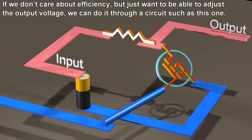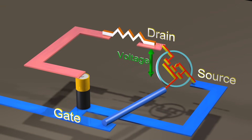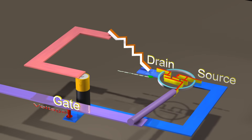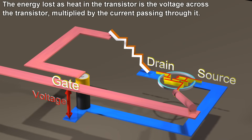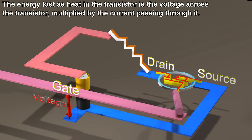If we don't care about efficiency, but just want to be able to adjust the output voltage, we can do it through a circuit such as this one. The energy lost as heat in a transistor is the voltage across the transistor multiplied by the current passing through it.